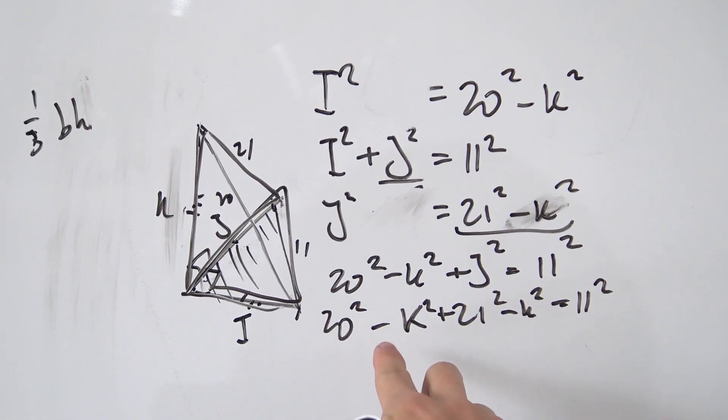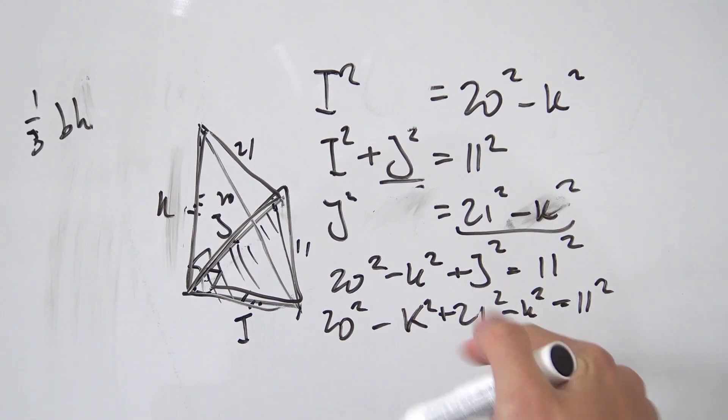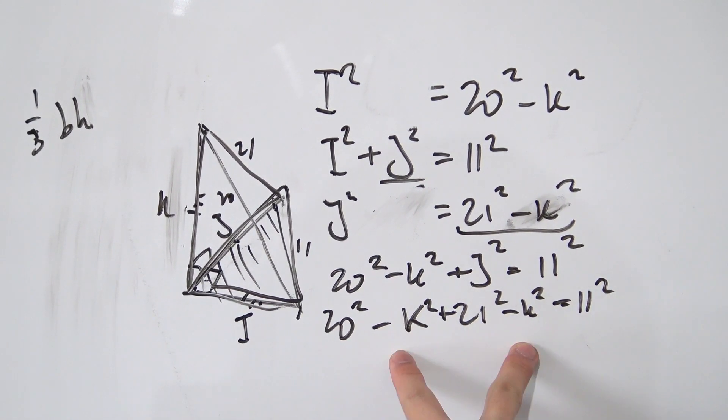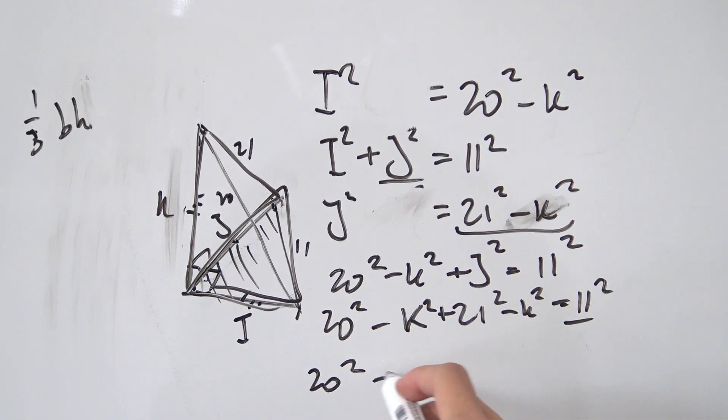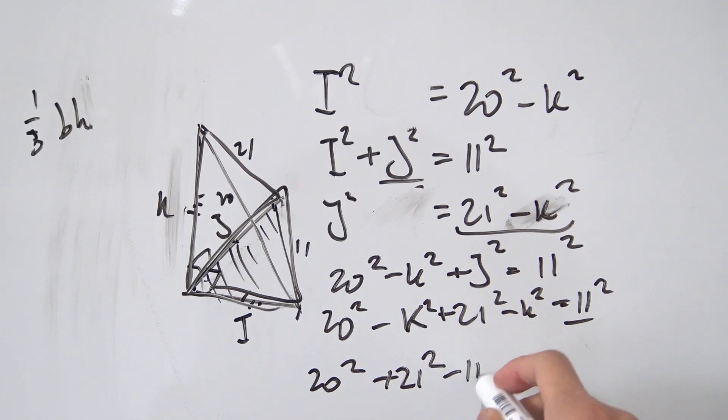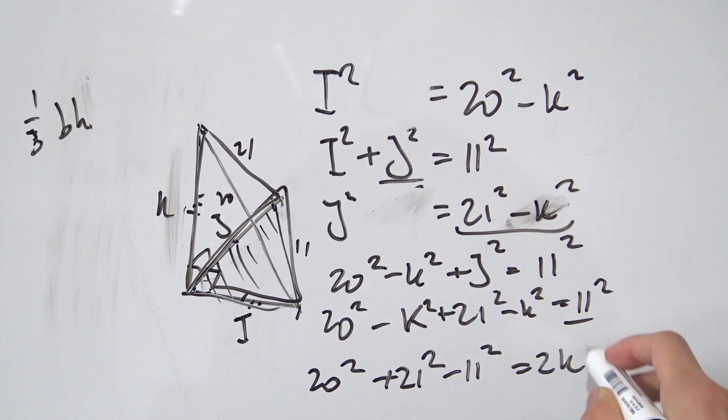Okay, we can clean things up a little bit. Here we have negative K squared and negative K squared. That's negative 2K squared. And let's actually throw that onto the other side of the equation and bring this 11 squared over. So we're going to have 20 squared plus 21 squared minus 11 squared being equal to 2K squared.